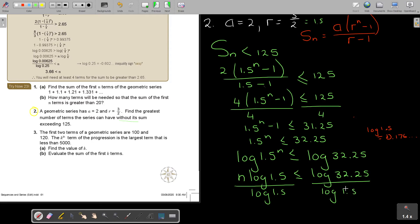And then I take my calculator, and I just press log 32.25 divide log 1.5 equals. And I get 8 points, so N is smaller than equal to 8.566. So let's move it up again.